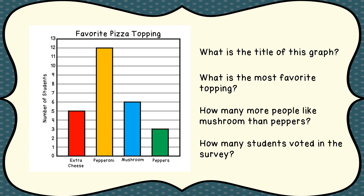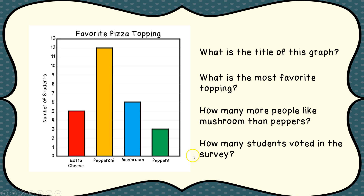How many students voted in the survey? We're going to find out how much each one of these bars is worth and add those numbers together. We have five like extra cheese, plus 12 like pepperoni — that is 17. Plus six more like mushrooms: 17 plus 6 is 23. And then three people like peppers, so 23 plus 3 would be 26. Twenty-six students voted in the survey.